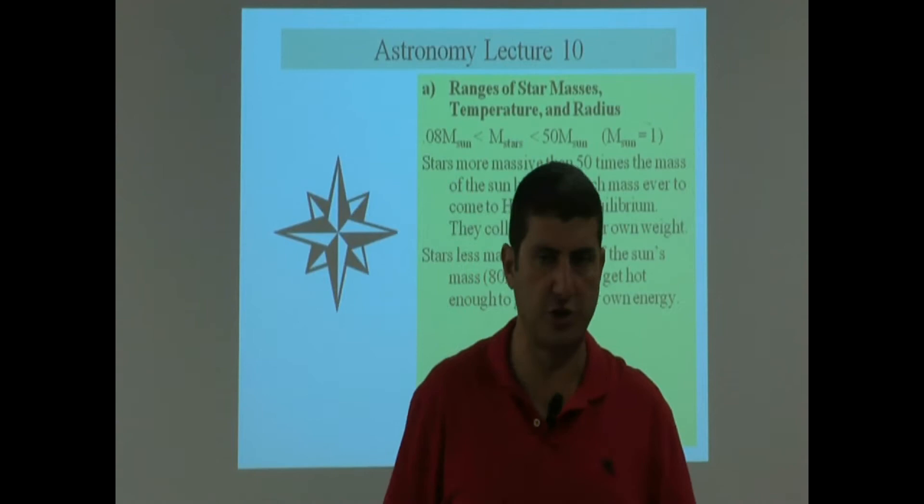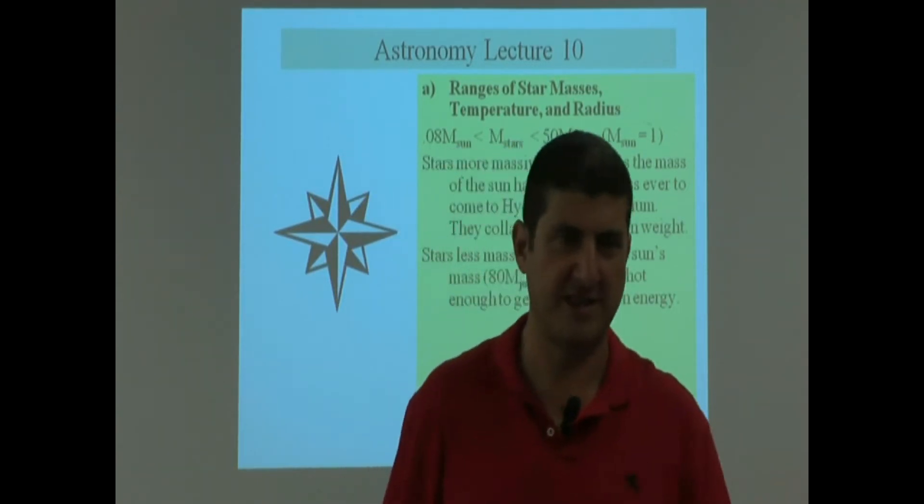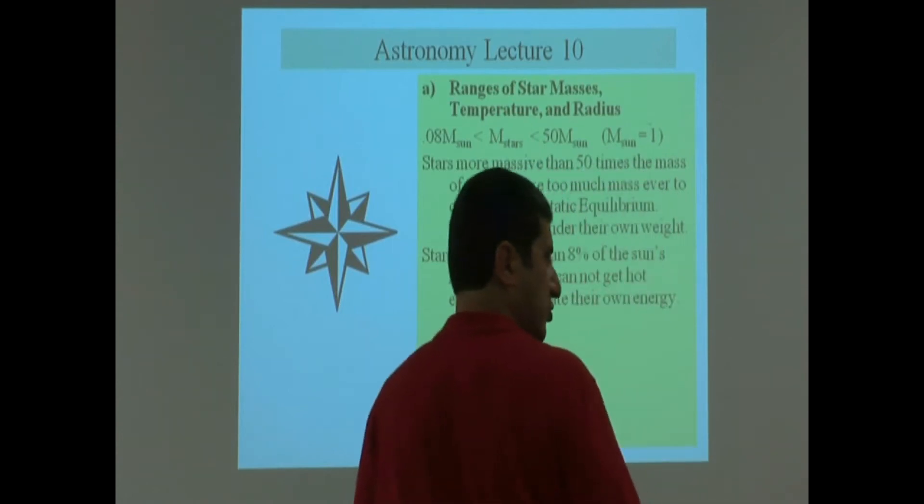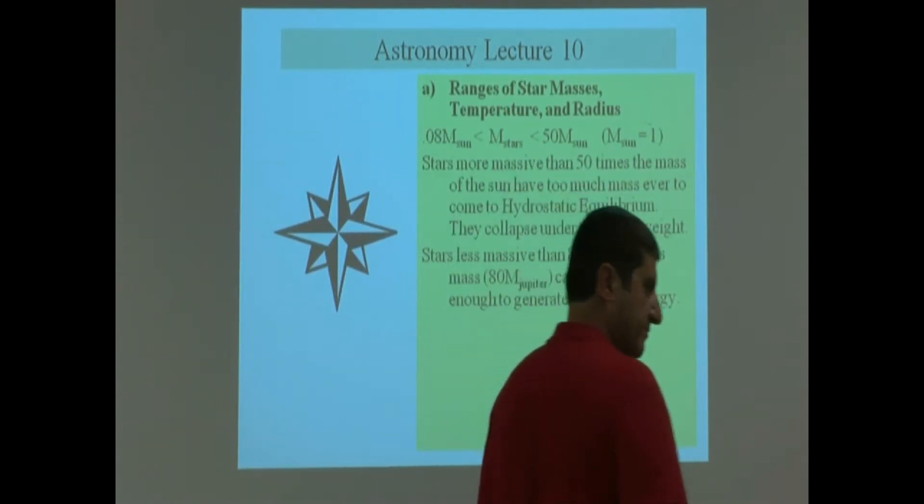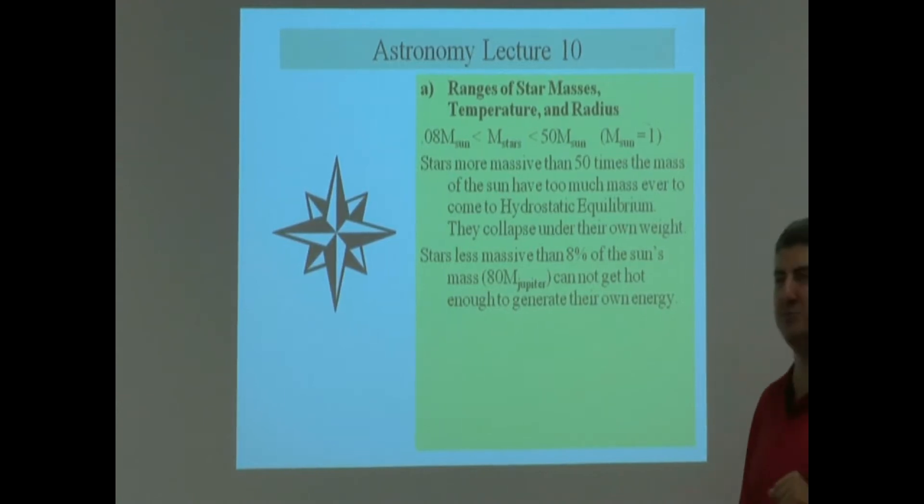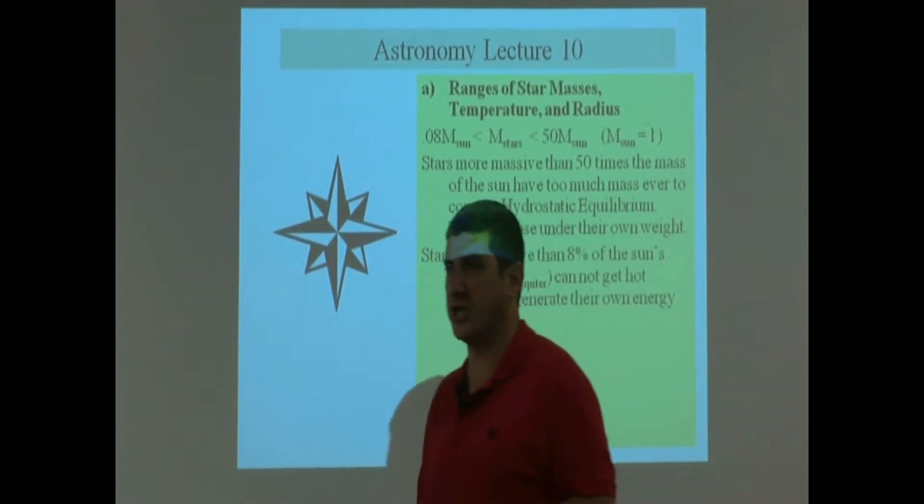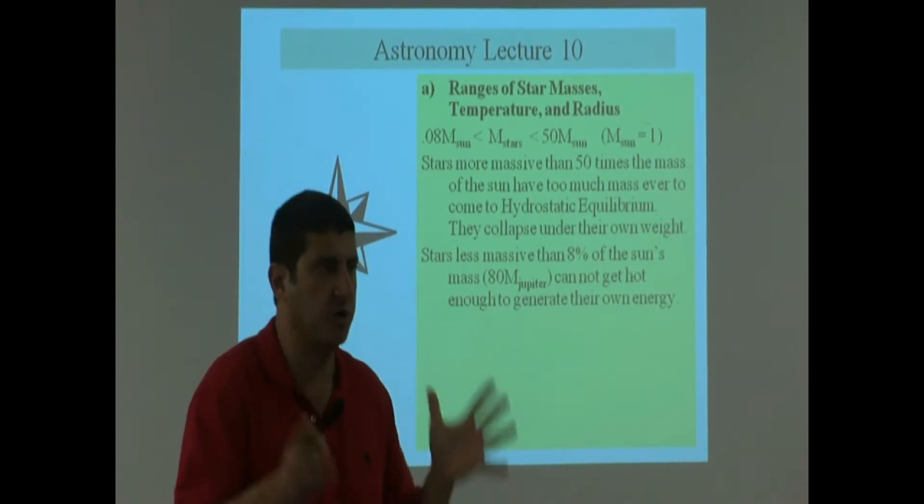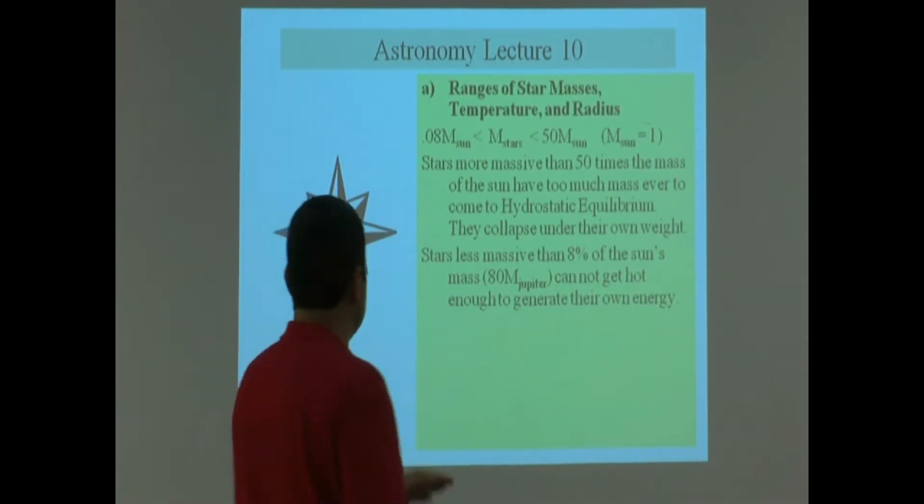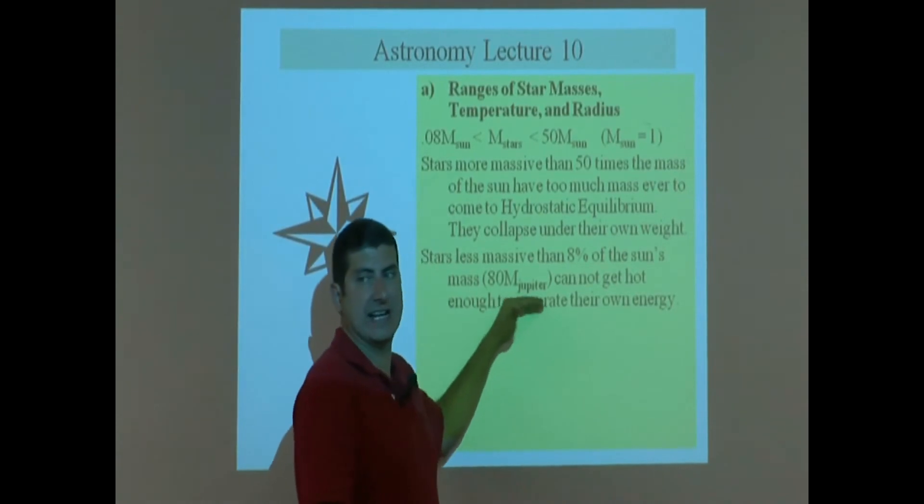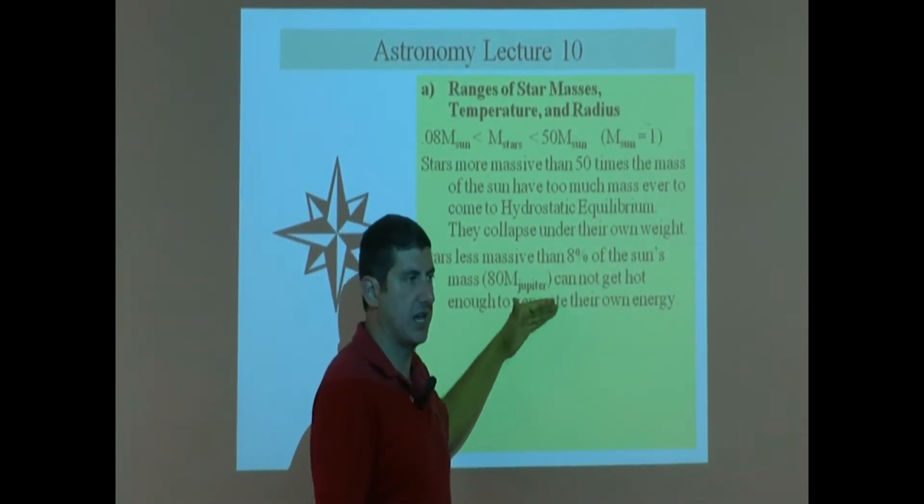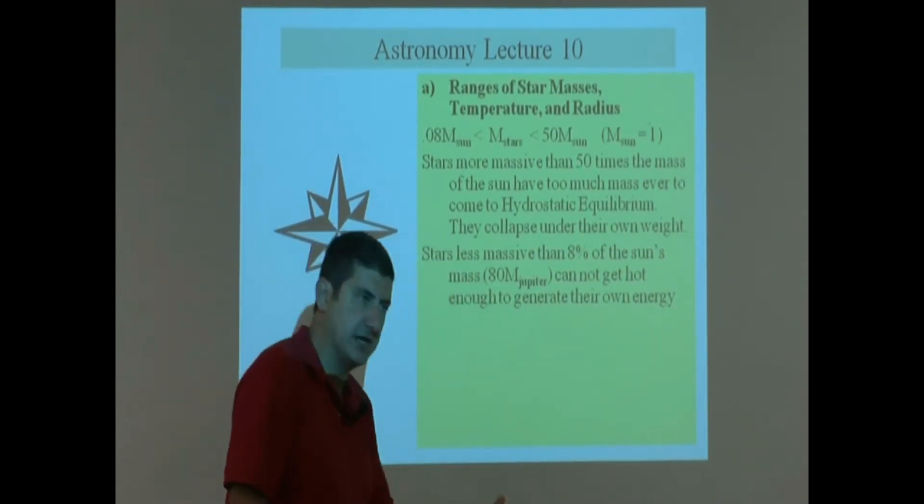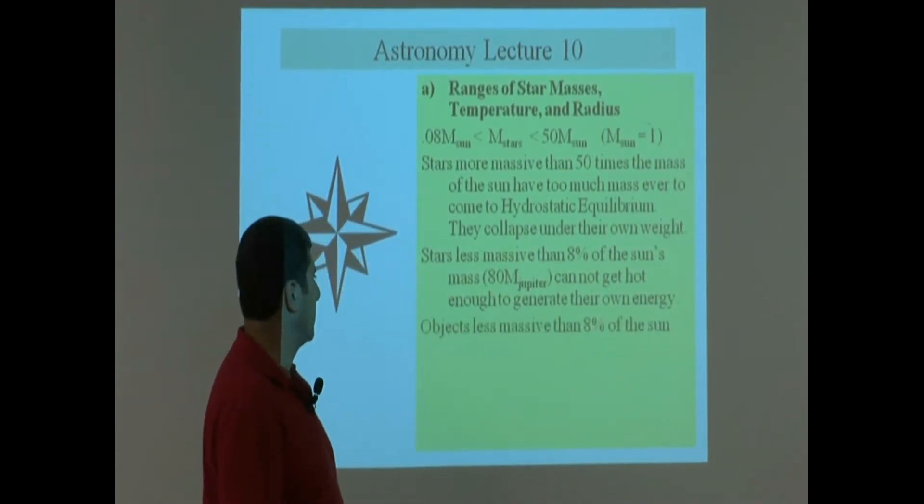By the way, what was the process of creating energy that our Sun used? And I gave the analogy of the little kid, so you shouldn't forget it now. Yeah, the PP chain, right? You'll never forget that, the PP chain. The proton-proton chain, otherwise known as hydrogen fusion. If a star is too light, its core cannot get hot enough to do hydrogen fusion. That's what this is saying. So it's got to have enough mass in order to be hot enough.